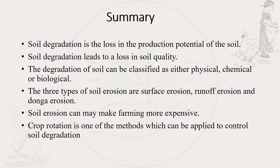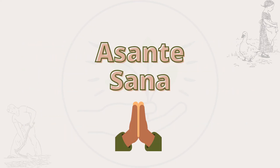To summarize everything we have discussed: soil degradation is the loss in the production potential of the soil. Soil degradation leads to a loss in soil quality, and it can be classified as physical, chemical, or biological. There are three types of soil erosion: surface erosion, runoff erosion, and donga erosion. Soil erosion can make farming more expensive, and crop rotation is one of the methods which can be applied to control soil degradation.